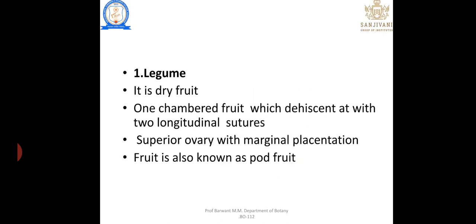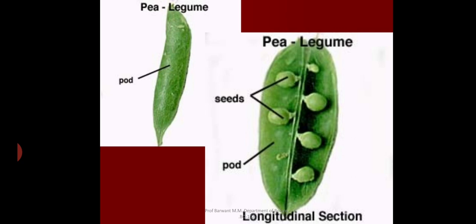Legume or pod: it is a dry, one-chambered fruit which dehisces along two longitudinal sutures, from a superior ovary with marginal placentation. In the figure we can see two longitudinal sutures along which the pod breaks and the seeds come outside.